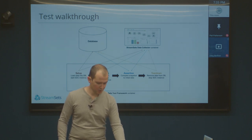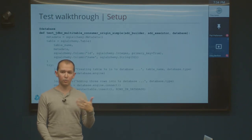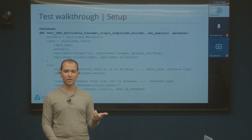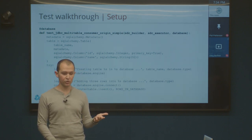Let me actually show what these steps look like in code. In the setup phase — I specifically talked about this whole fixture thing with PyTest for a reason. Our tests are all called test_something, in this case test_jdbc_multitable_consumer_origin_simple. The three fixtures we use in this test are called sdc_builder, sdc_executor, and database. The first two — sdc_builder and sdc_executor — if you give the same version of SDC for both building and running the pipelines, it'll actually be a single data collector instance. The framework is smart enough to know: he wants to build it in 3.4 and run it in 3.4, so I'll just start up one data collector.